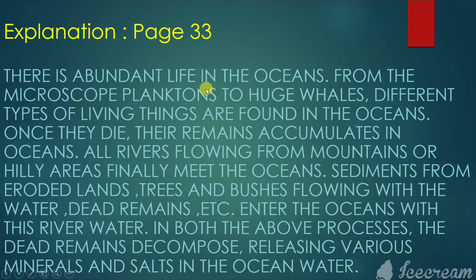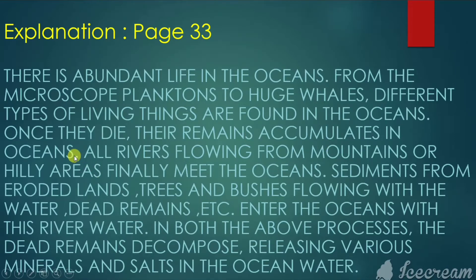There is abundant life in oceans. From microscopic plankton to huge whales, different types of living things are found in the oceans. Once they die, their remains accumulate in oceans. All rivers flowing from mountains or hilly areas finally meet the oceans.